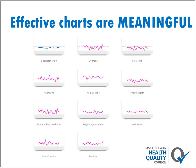Finally, effective charts are meaningful. An example shows multiple run charts presenting the same data — the top left presents data for the whole province, and the rest drill down into the same metrics for each Saskatchewan health region. The data are presented in a way that flows and makes sense. Now let's look at what you shouldn't do. I'm sure you can all think of examples where you've seen charts not presented in the best way — here are a few examples.